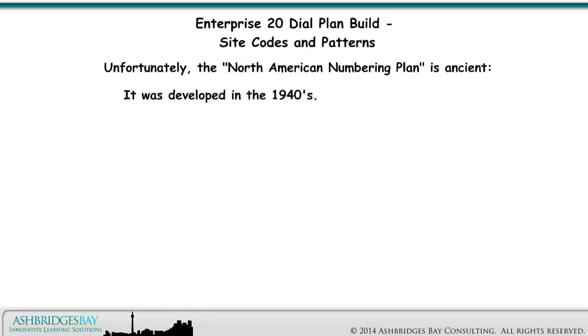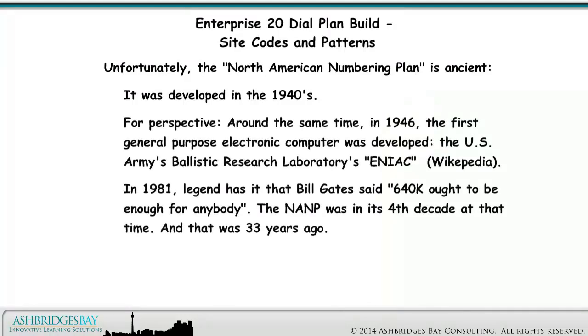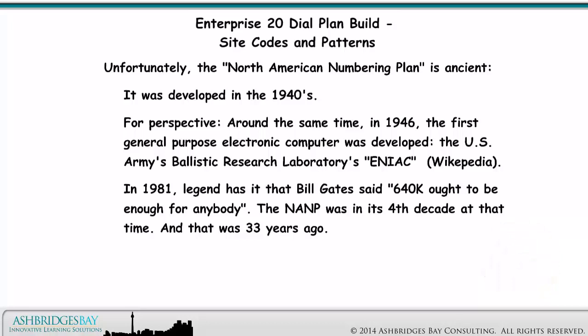Unfortunately, the North American numbering plan is ancient — it was developed in the 1940s. For perspective, around the same time in 1946, the first general purpose electronic computer was developed: the U.S. Army's Ballistic Research Laboratory's ENIAC. In 1981, legend has it that Bill Gates said, '640K ought to be enough for anybody.' The NANP was in its fourth decade at that time, and that was 33 years ago. We can only do so much with such old technology.